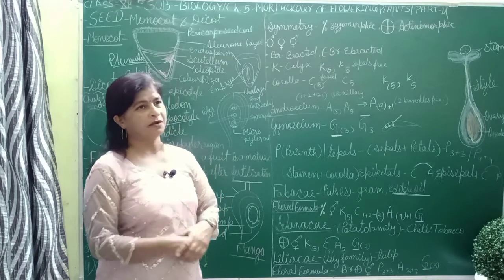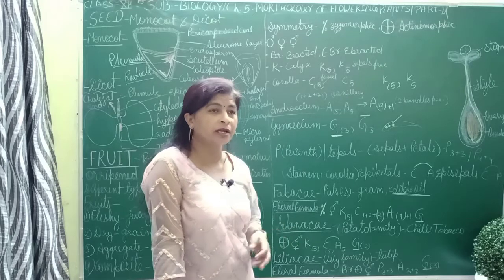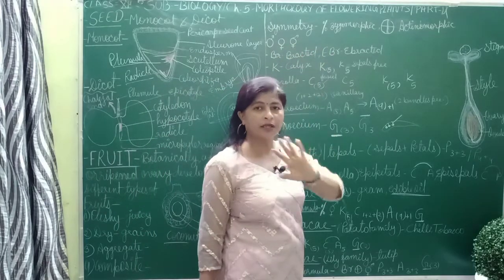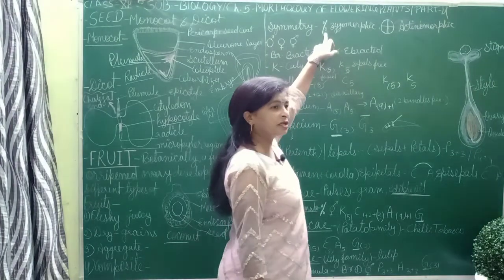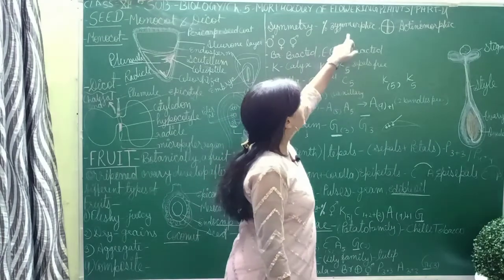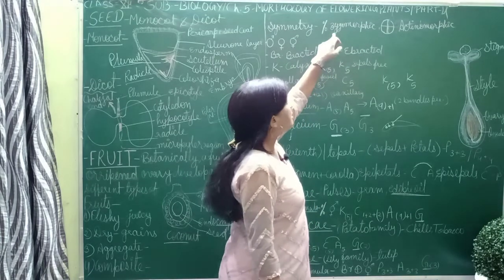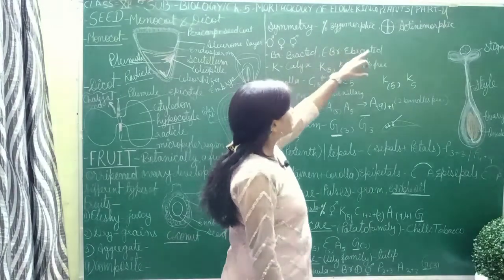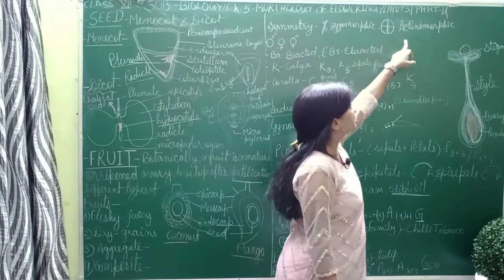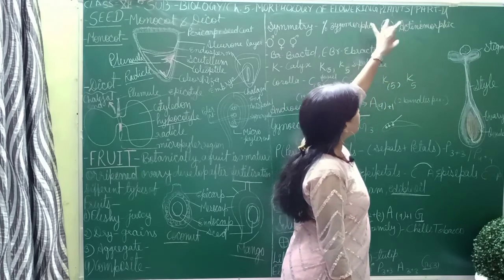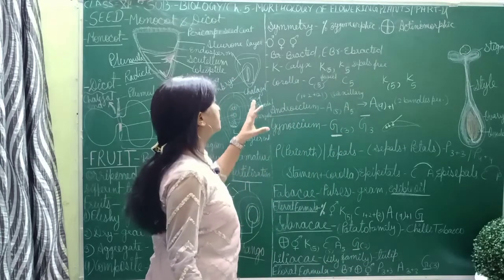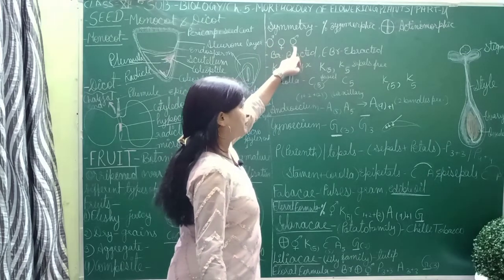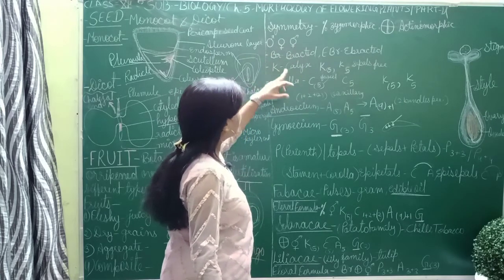The last topic of this chapter is plant families and how to write floral formulae. First we take the symbols. Symmetry: the percentage symbol means zygomorphic — meaning it can be divided into equal halves from only one axis. An asterisk symbol means actinomorphic — meaning it can be divided into two equal halves from any axis.